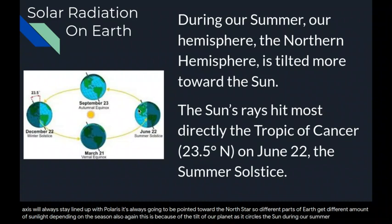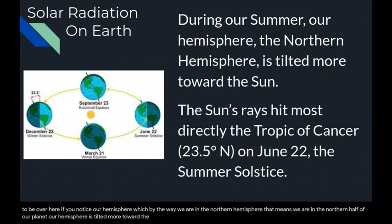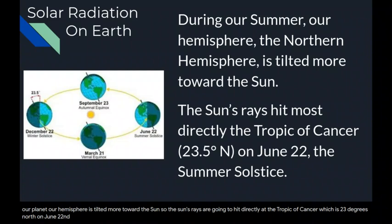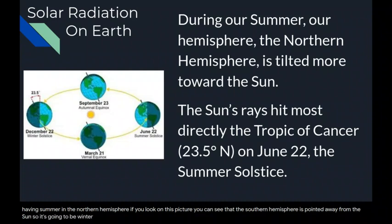During our summer, the northern hemisphere is tilted more toward the sun. The sun's rays hit directly at the Tropic of Cancer, which is 23 degrees north, on June 22nd — the summer solstice. We have more daylight and less night, and that's what our summer is. As the northern hemisphere experiences summer, the southern hemisphere is pointed away from the sun, so it is winter there.